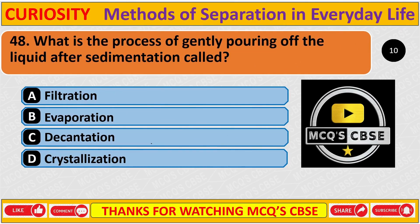Question: What is the process of gently pouring off the liquid after sedimentation called? Correct answer is C: Decantation.